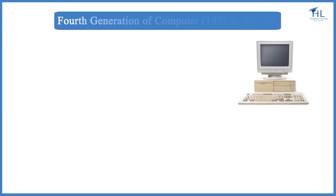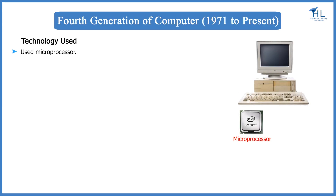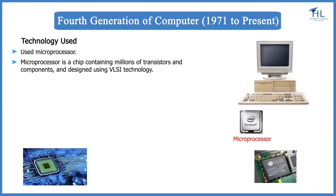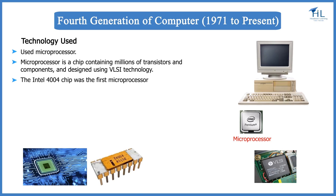The fourth generation of computers, from 1971 to the present day, is marked by the development of the microprocessor. A microprocessor is a chip containing millions of transistors and components, designed using VLSI technology. Very Large Scale Integration, or VLSI, technology allows hundreds of thousands of components to be integrated in a small chip. The Intel 4004 chip was the first microprocessor. Components like the CPU and memory were located on a single chip, and this generation gave rise to the personal computer.